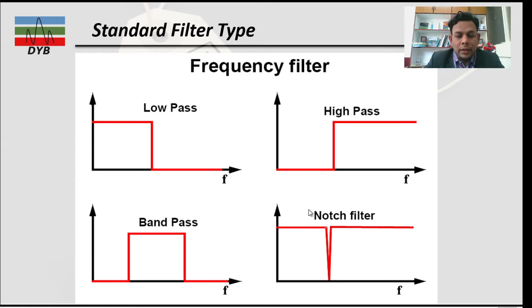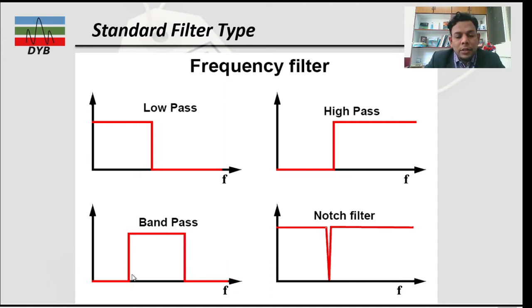Looking at the spectrum: the X axis has frequency and the Y axis has amplitude. The low pass filter allows only low frequencies to pass. The high pass or low cut filter cuts the lower frequencies and retains all higher frequencies. In band pass, the red line shows the frequency range kept in the dataset, and any frequency falling within the red marked region is preserved.